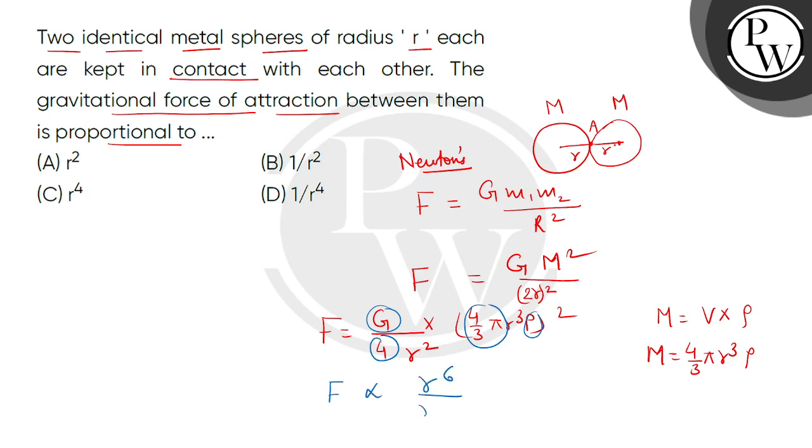R to the power 6 divided by R square. It means that F is directly proportional to R to the power 4. The correct answer is option C. Thank you.